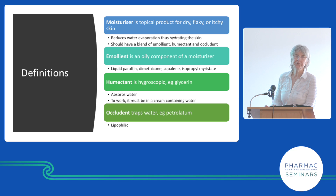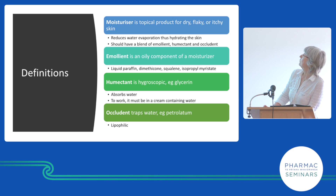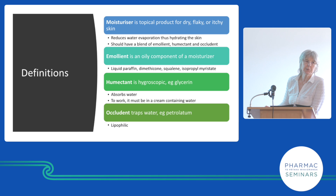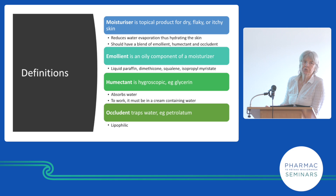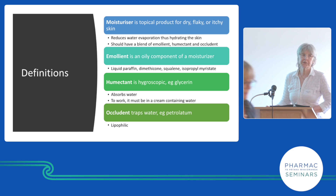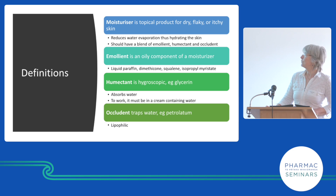A moisturizer is a topical product for dry skin. It reduces water evaporation so it holds water in the stratum corneum. To do so effectively you need a mixture of different products with various properties: a humectant which attracts water, an emollient that softens the skin, and an occludent that stops it evaporating.